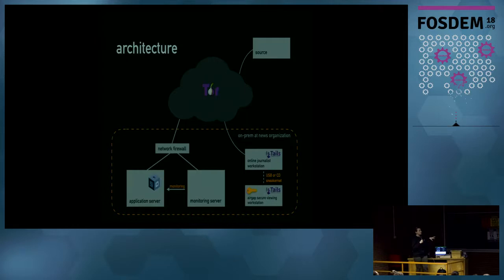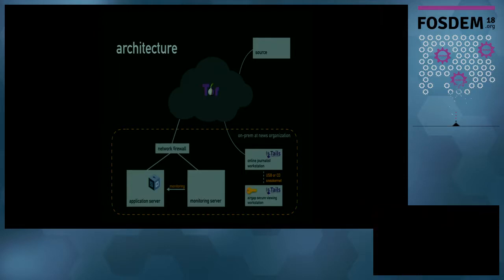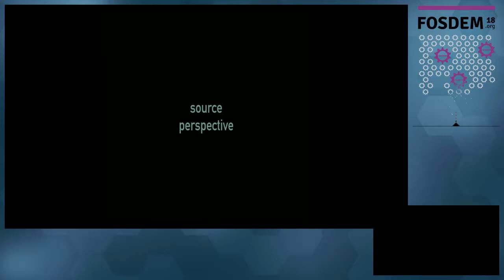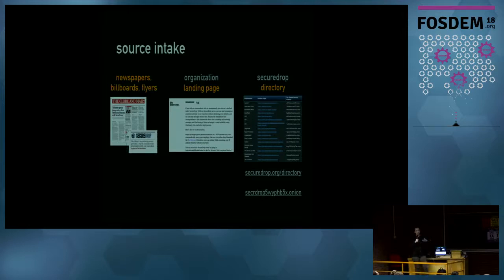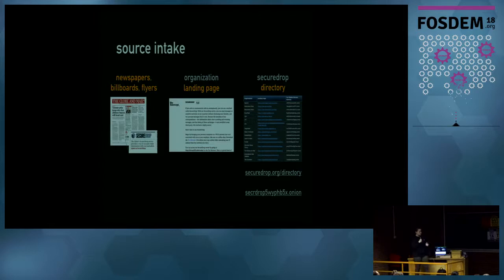For the average source, there's no way for them to reach SecureDrop without using Tor Browser — and that's to protect them. First, a source needs to find out that SecureDrop exists and that a news organization is running it. That happens in different ways. For example, the Globe and Mail — a popular newspaper in Canada — puts on the front page of their physical newspaper that they run a SecureDrop, what it is, and a link to how you can access it.